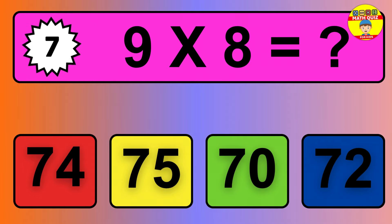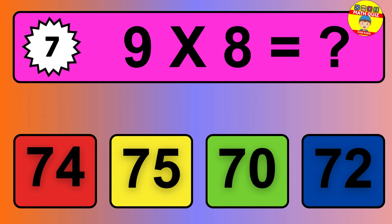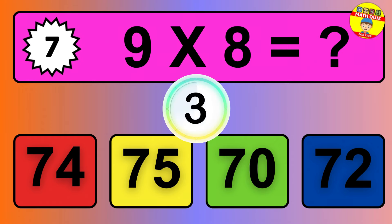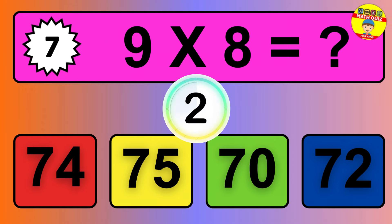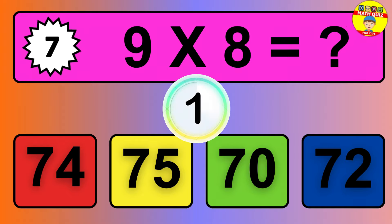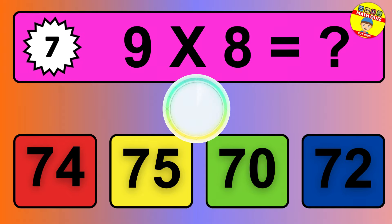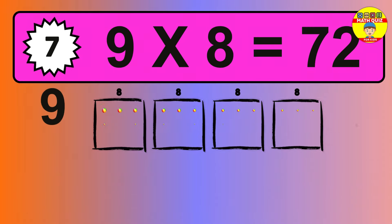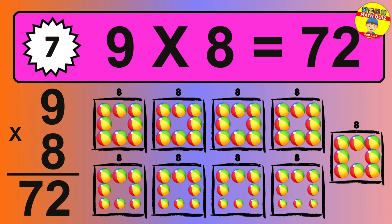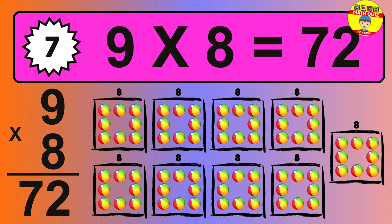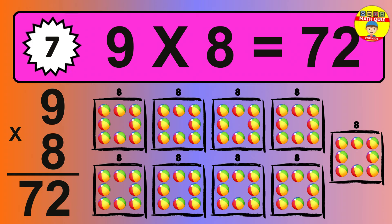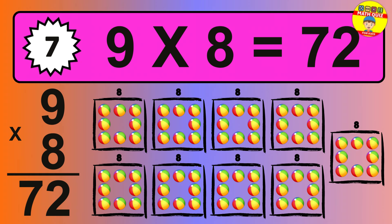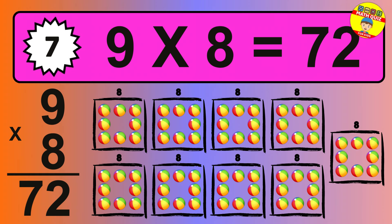Question 7. 9 times 8 equals what? The answer is 9 times 8 is 72. To calculate, we have 9 groups with 8 balls each one. So how many balls do we have?